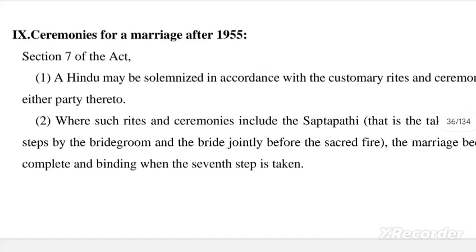The seven steps are: first, nourish each other; second, be each other's strength; third, prosper and stay faithful; fourth, love and respect for families; fifth, care for children; sixth, to live a healthy and peaceful life; and seventh, beyond bond of friendship and loyalty.